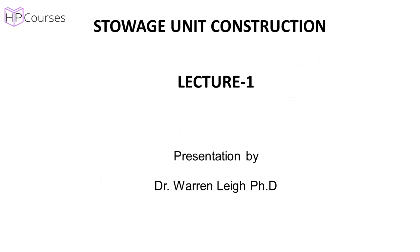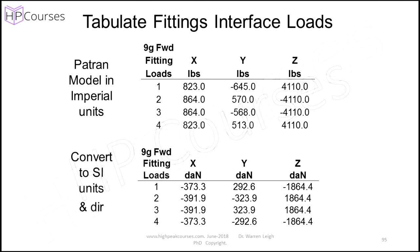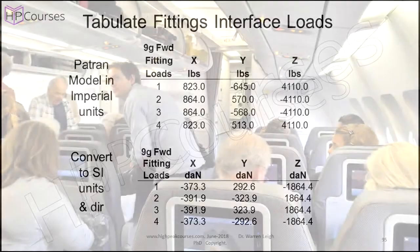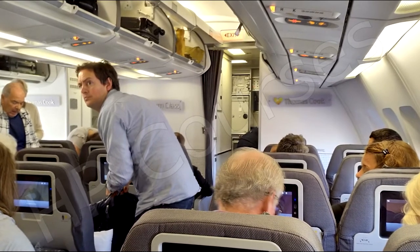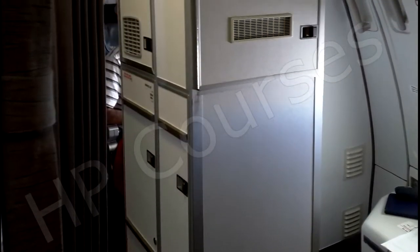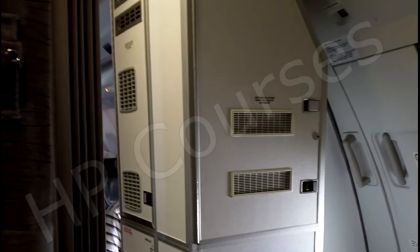Lecture 1. The focus is on producing one of the aircraft composite materials structural certification reports called the interface load report. The magnitude of the loads due to aircraft gusts and manoeuvres imparted to the aircraft structure at the stowage unit attachment point are known as the interface loads. These are the loads we need to calculate and place in the certification report. Lecture 1 will introduce you to the environment of aircraft composite interiors, as it is important to obtain a mindset set on the world of aircraft composite interiors.